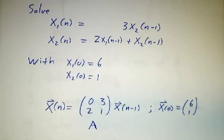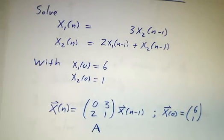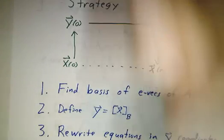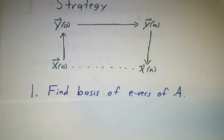Now, whenever you've got a problem of the sort, x today is a matrix times x yesterday, the strategy is the same. The strategy is diagonalize the matrix A.